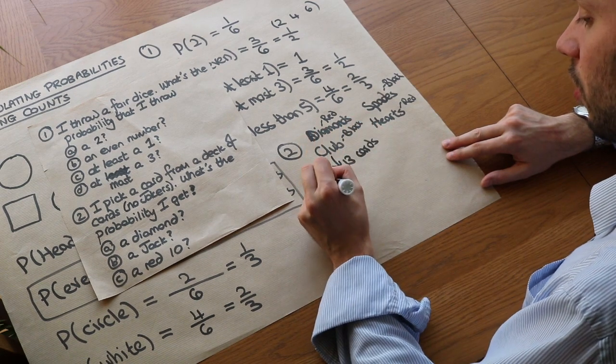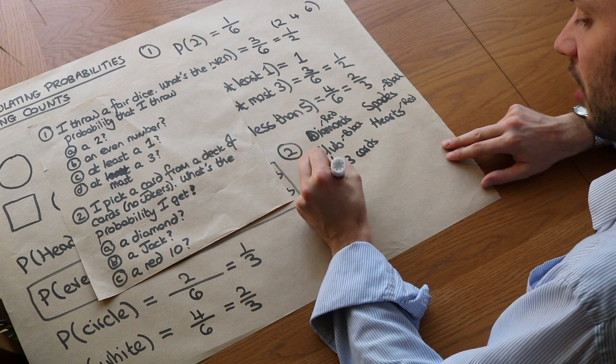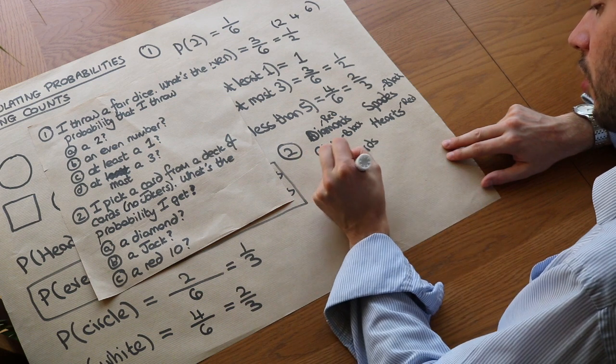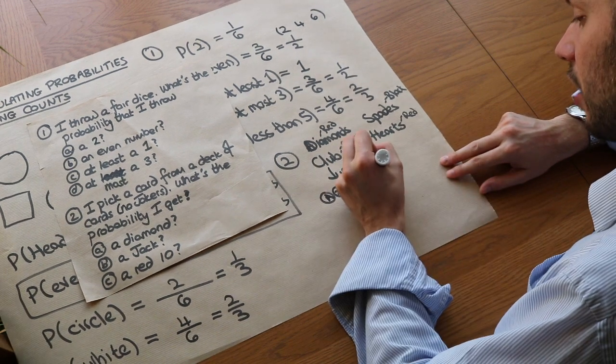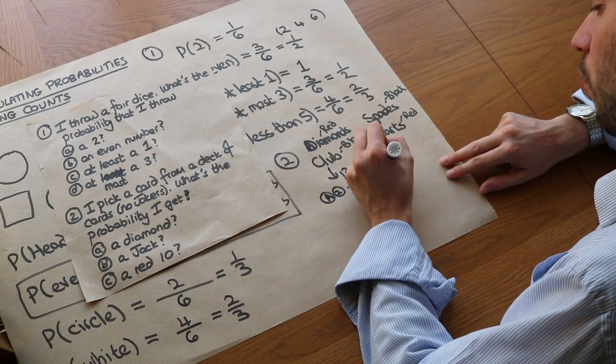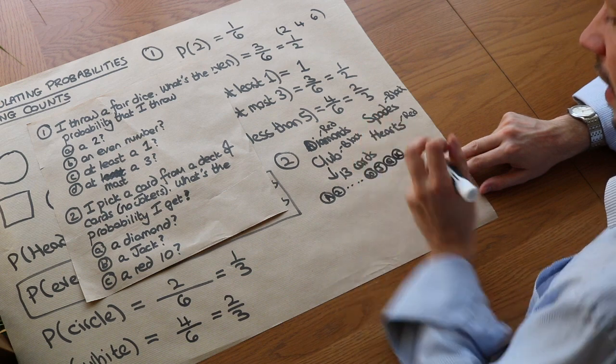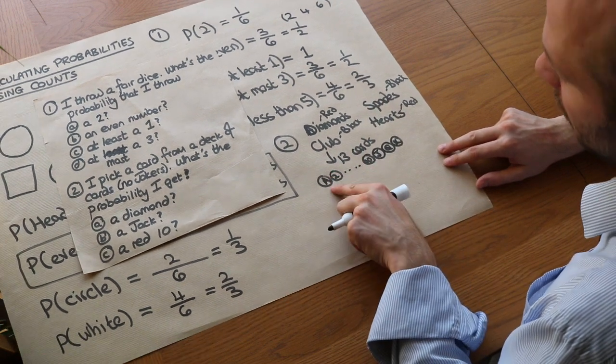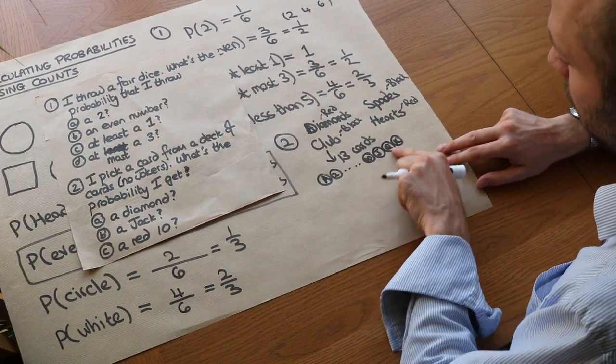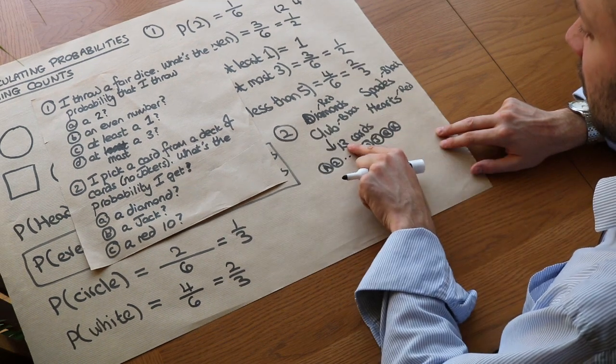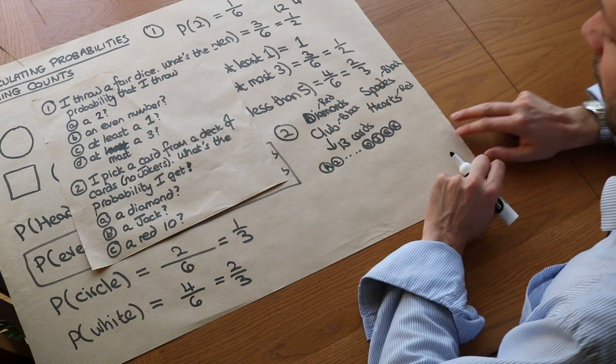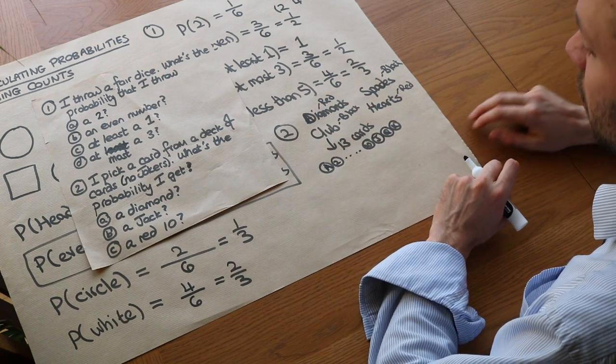So there's 13 cards. Where the cards are, you've got one, which is otherwise known as an ace. You've got two, all the way up to 10. And then instead of 11, you have a jack, and then a queen, and then a king. So you've got 10 number cards, if you include the ace as a number card, and then three picture cards: the jack, queen, and the king. So there's 13 of each suit, and you've got four suits. Therefore, that's 52 cards in total.